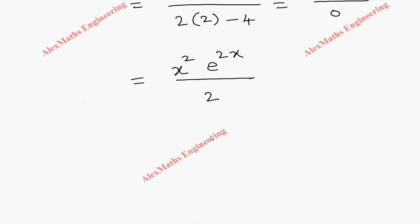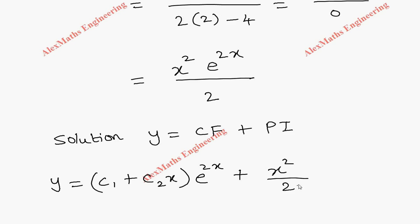Therefore, the complete solution is y = CF + PI, so y = (c₁ + c₂x)e^(2x) + (x²/2)e^(2x).